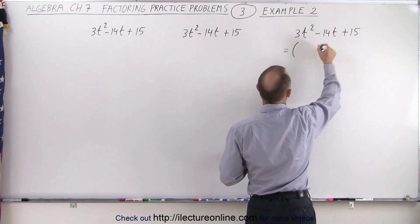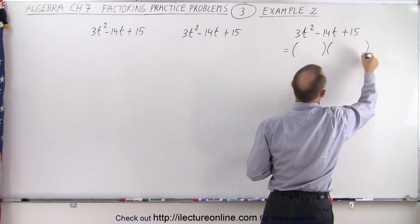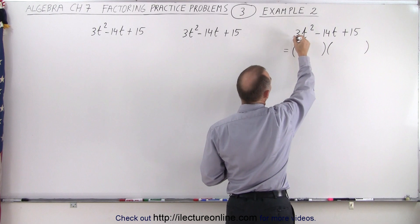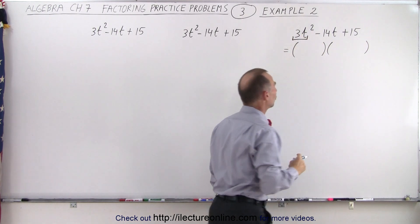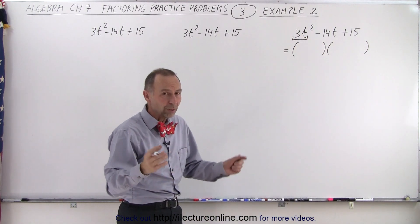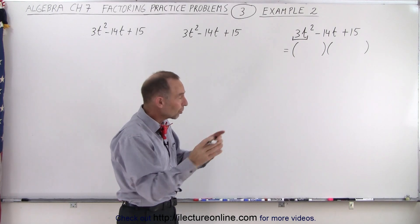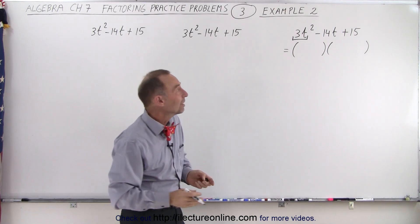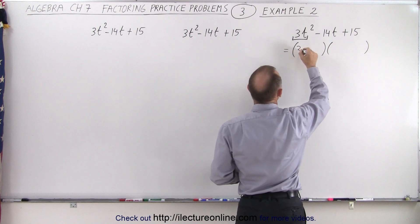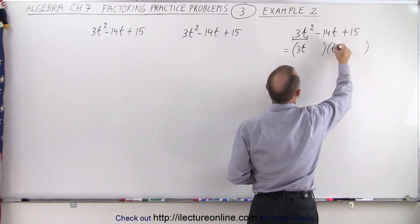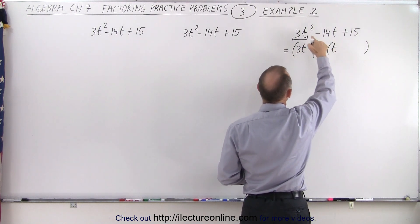So let's try this. We know that this is going to be written as the product of two binomials. First of all we take a look at the first term, 3t squared. The only way in which we can take two factors and multiply them together and get 3t squared is by taking 3t and t. 3t times t gives us 3t squared.